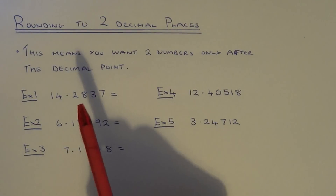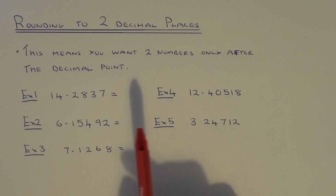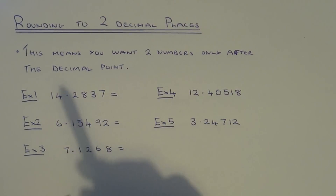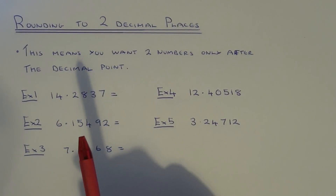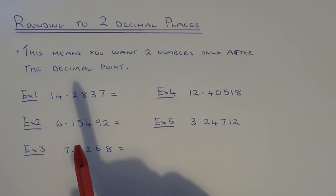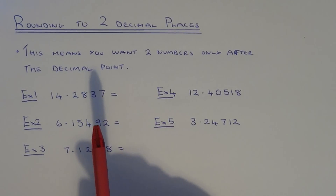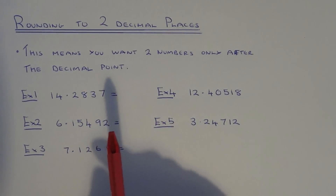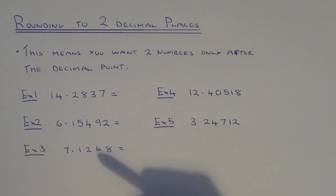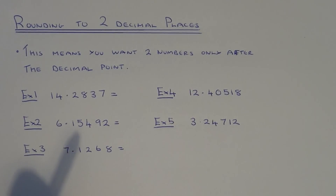If you're asked to round a number off to two decimal places, this means you only want two numbers after the decimal point. Rounding to two decimal places is useful if you're doing money problems, because all money is to the nearest penny or the nearest cent, so you need to round it off to two decimal places.